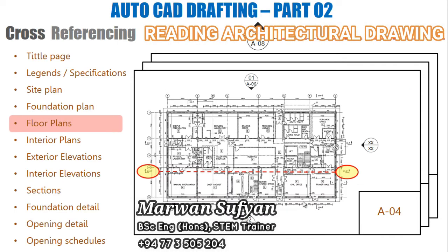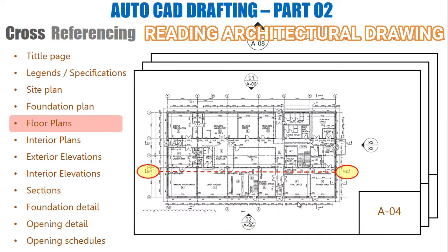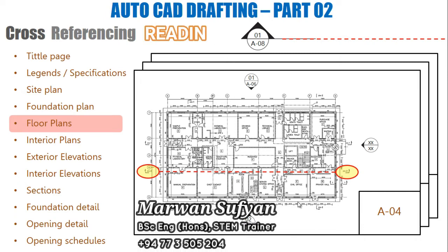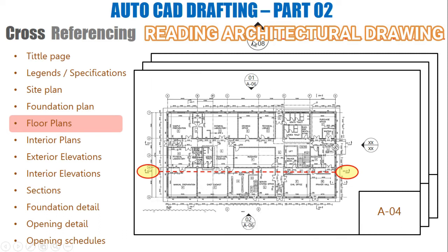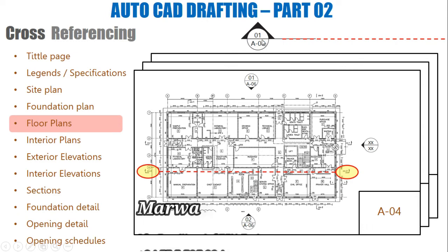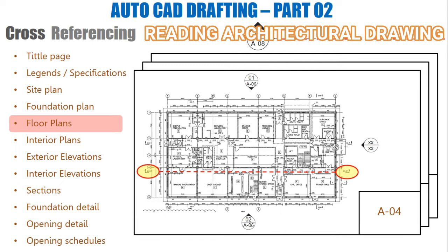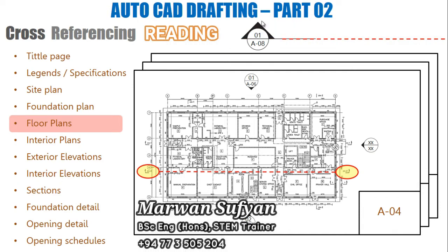Jumping to the floor plan — in the floor plans, foundation plan, and even interior plans we can find the same section cut line, because the section cut line runs throughout the level as a vertical plane. Checking here, it says this section cut can be found in sheet A08. The number in the center is the view number — in a particular drawing sheet there may be multiple views. This particular section cut is view number one.